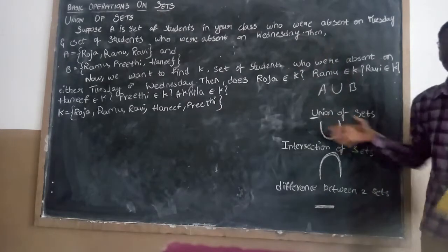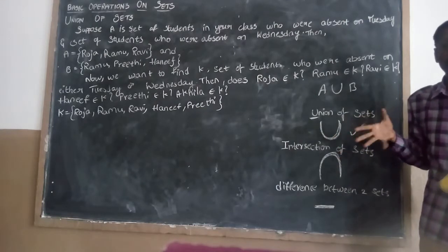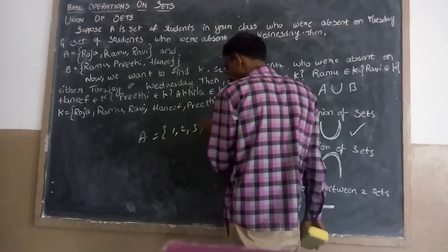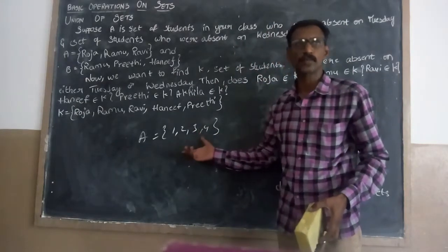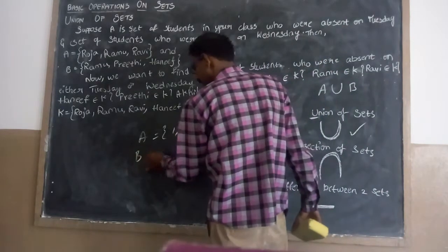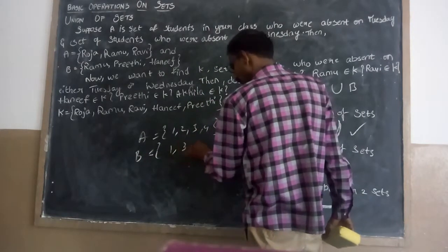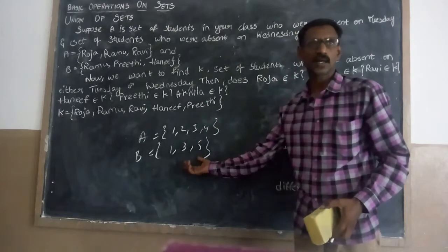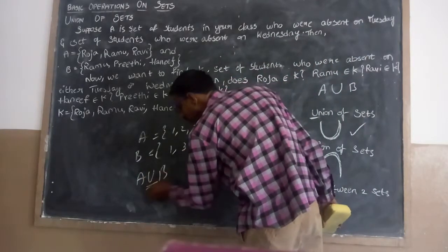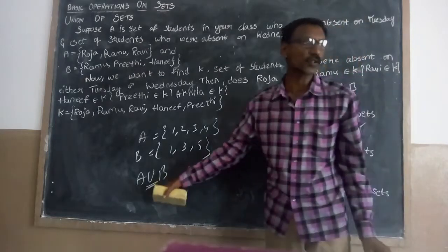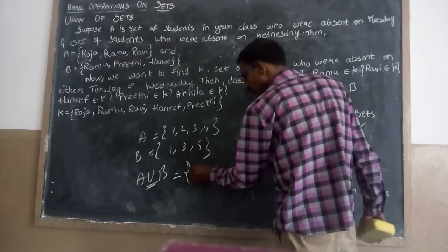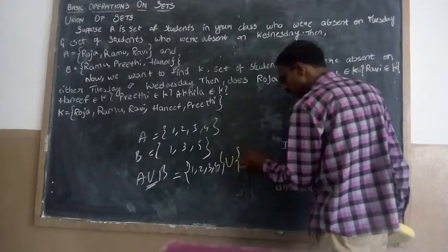I will give the definition. First, let me tell you how to make union. Suppose I have a set A equal to 1, 2, 3, 4. This is my set — it contains elements 1, 2, 3, 4. And I take set B as 1, 3, 5. These are all natural numbers. I would like to make them in union. So A union B — we write 1, 2, 3, 4 union with 1, 3, 5. Here 1 and 3 are common elements.